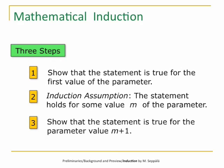First we have to show that the statement is true for the first value of the parameter. Then we make the induction assumption — we assume that the statement holds for some value M of the parameter. And then in the third step we show that if it is true for M, then it is true also for M plus 1.